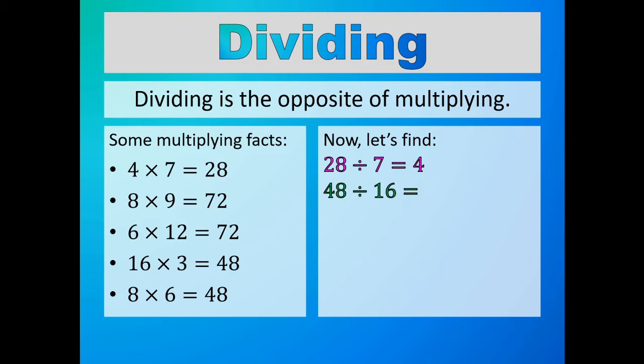The last two equations have the product of 48. But we also need 16 to be one of the numbers being multiplied, and here we find that in the fourth equation. Here is the product of 48 and the number being multiplied of 16. The only other number being multiplied is 3. So 48 divided by 16 is equal to 3.